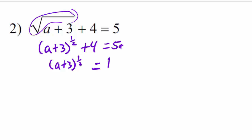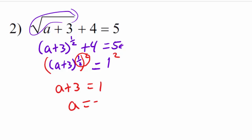To undo the half power or the square root, we raise to the second power. The power-to-a-power rule says to multiply the exponents: one-half times 2 is 1, and anything to the first power is an identity. So we end up with A plus 3 equals 1. Squaring the right side also gives 1. We continue solving for A by subtracting 3 from both sides, giving us negative 2.